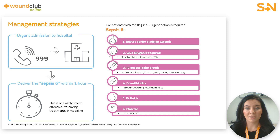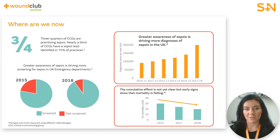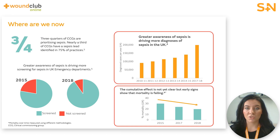Since its inception, the Sepsis 6 treatment protocol has grown in popularity and is now used in more than 99% of UK hospitals. Since these tools and guidelines have been developed and rolled out nationwide, they have had a really positive effect, especially on the awareness of sepsis. Three quarters of CCGs are now prioritising sepsis, and nearly a third of CCGs have a sepsis lead identified in 75% of their practices. The rate of screening for sepsis in emergency departments has risen from 78% to 91% between 2015 and 2018, linked with the rise in timely antibiotic administration from 63% to 80% over the same period.